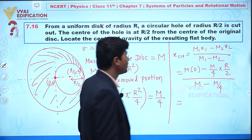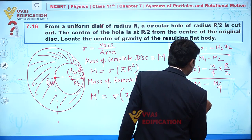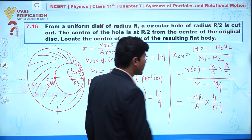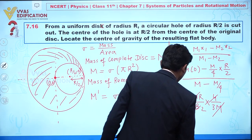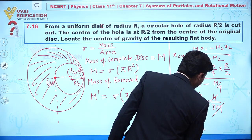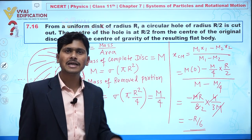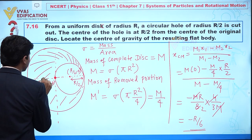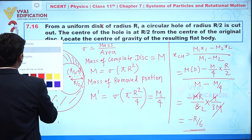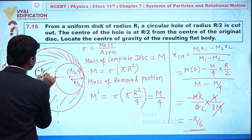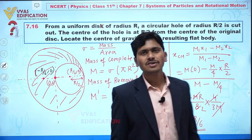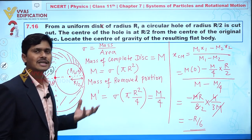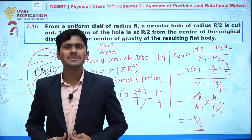Solving, the numerator is 0 − (M/4)·(R/2) = −MR/8, and the denominator is 3M/4. So x_cm = (−MR/8) / (3M/4) = −R/6. The M cancels. Therefore the center of mass of the remaining portion is at position (−R/6, 0). This is the location of the center of gravity of the resultant flat body.